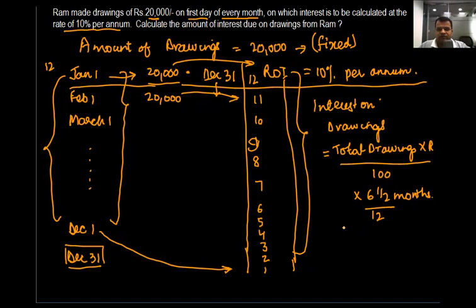You must be wondering how did I get the 6.5 months. The 6.5 months is nothing but an average of all these months taken together.